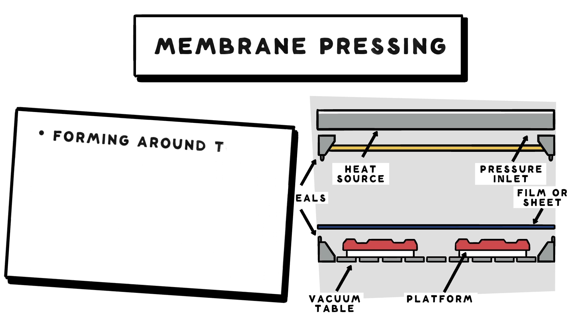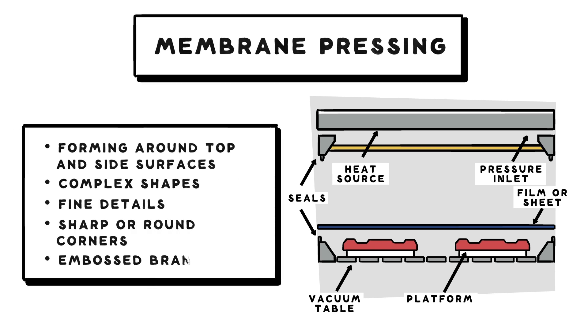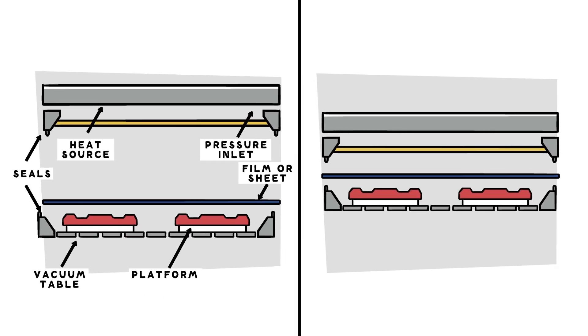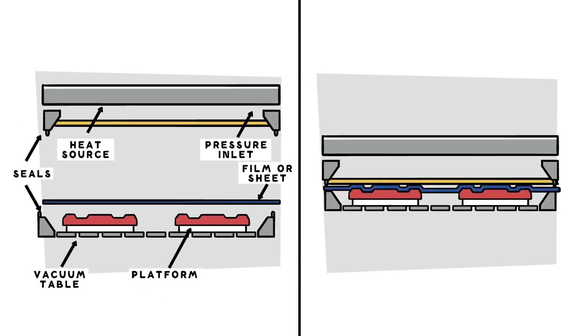Membrane pressing is used to encase substrate materials like MDF or wood in thermoplastics. The thermoplastic sheet is heated and vacuum formed over the surface.